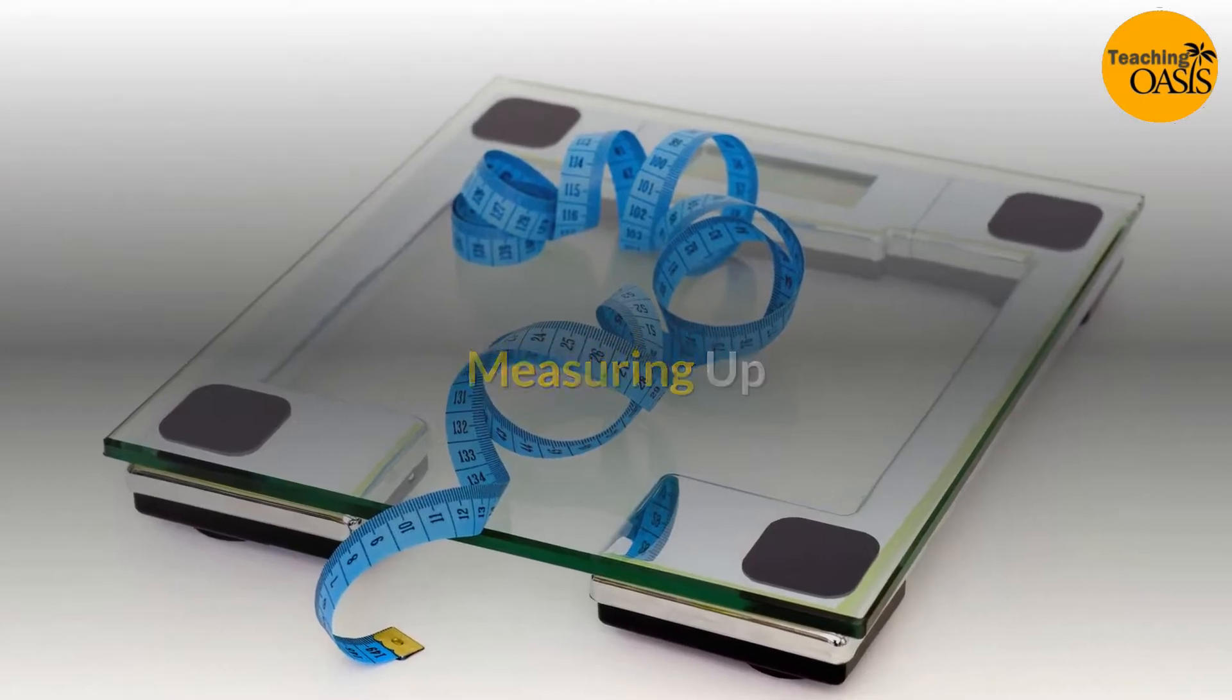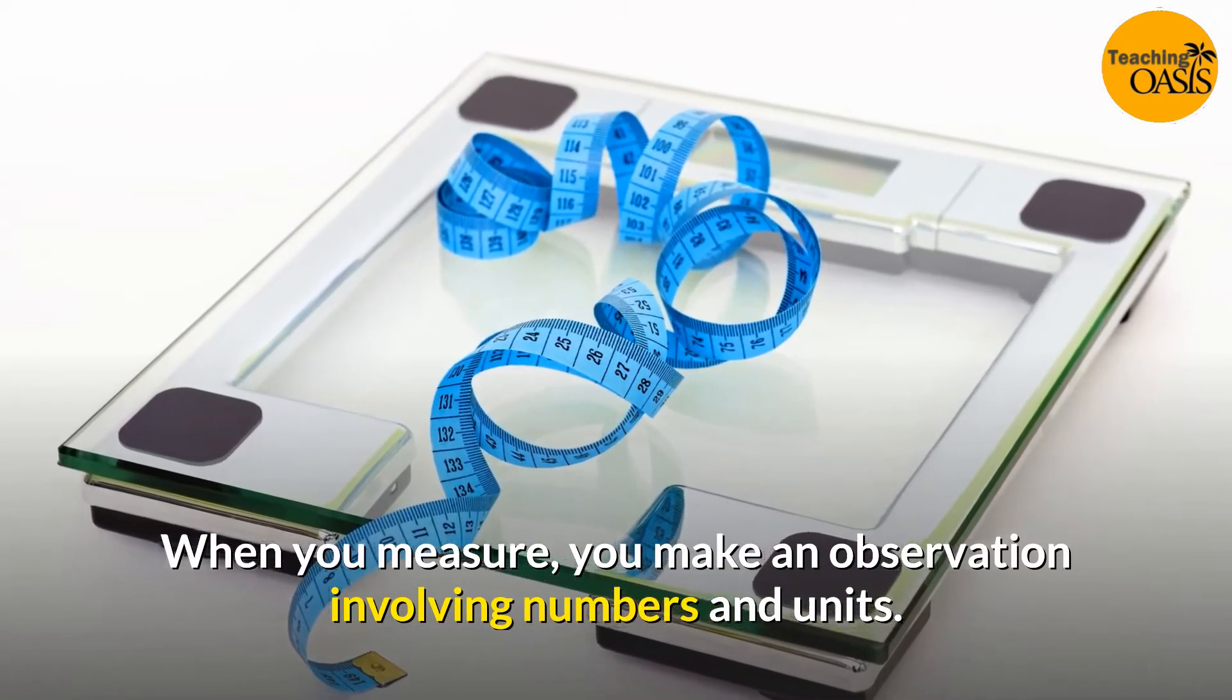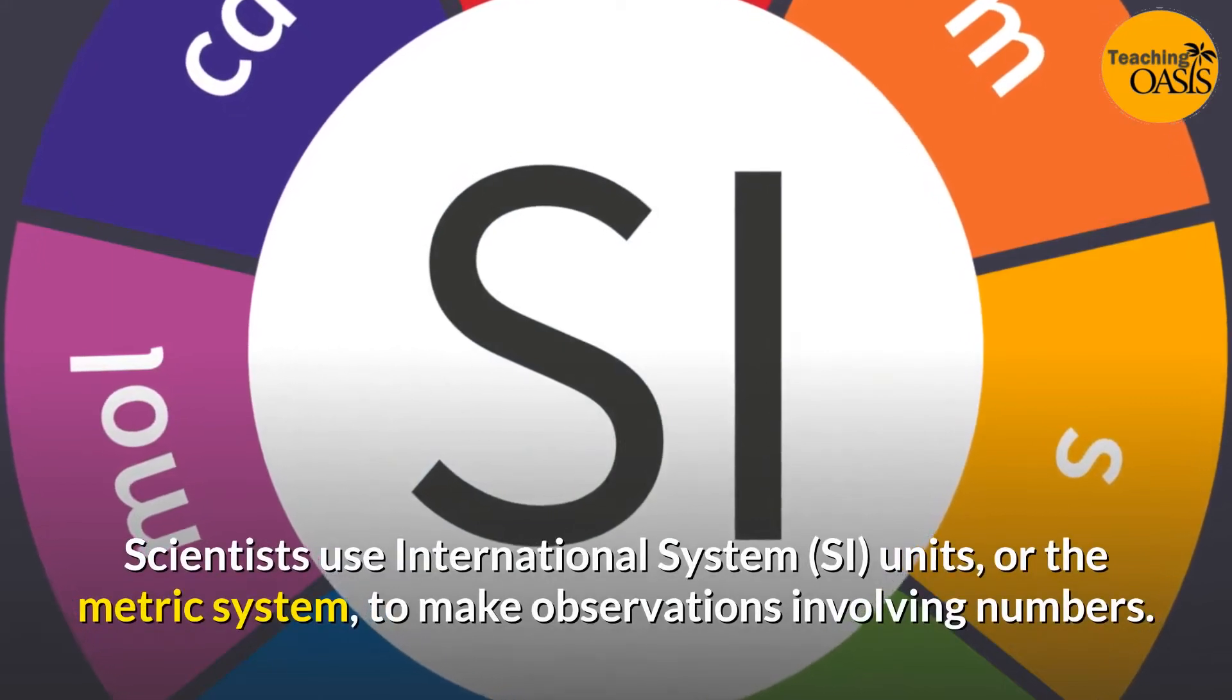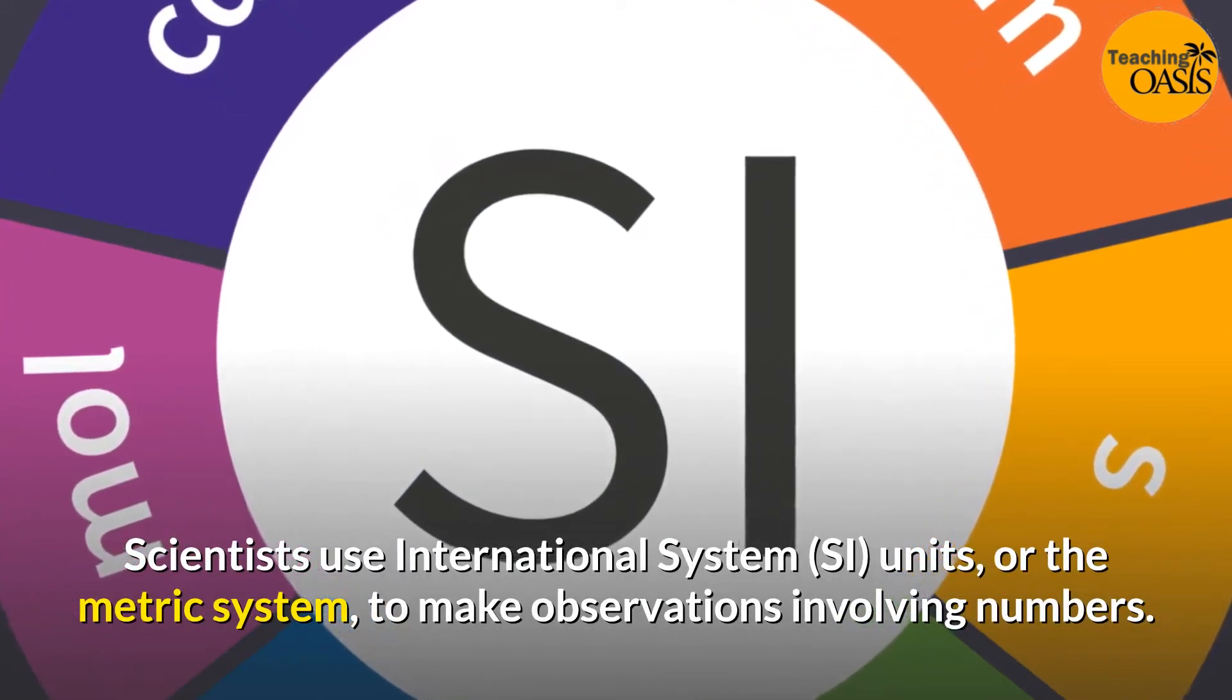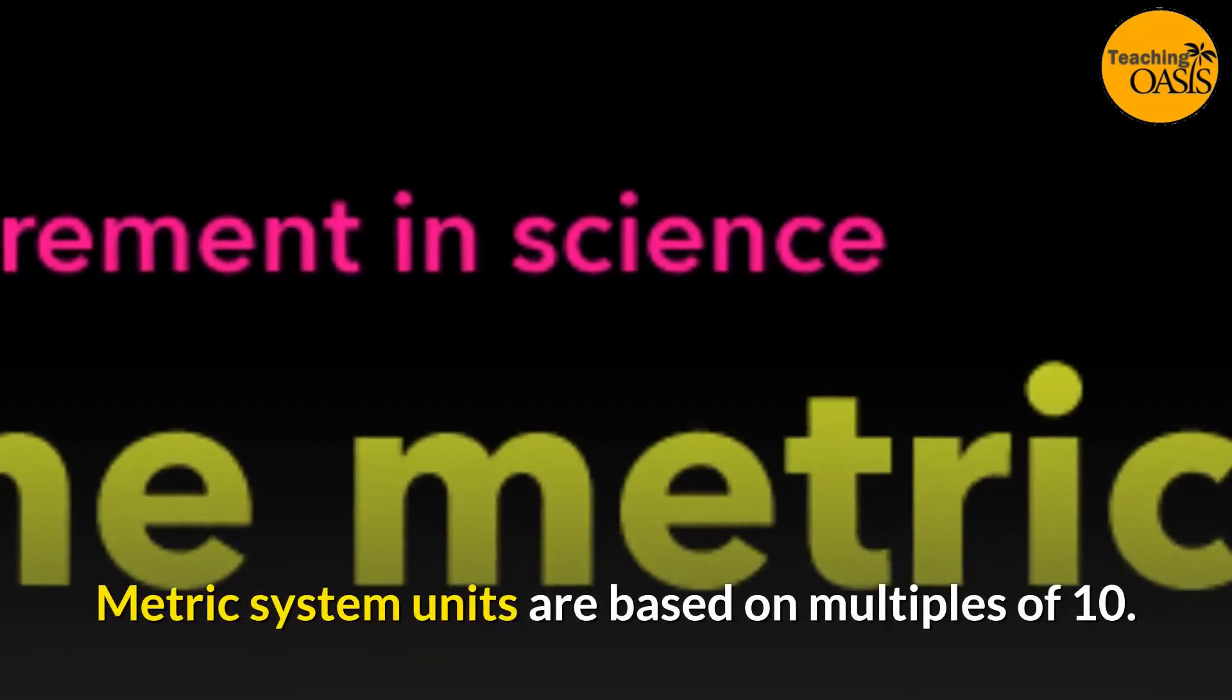Measuring up: When you measure, you make an observation involving numbers and units. Scientists use International System (SI) units or the metric system to make observations involving numbers. Metric system units are based on multiples of 10.